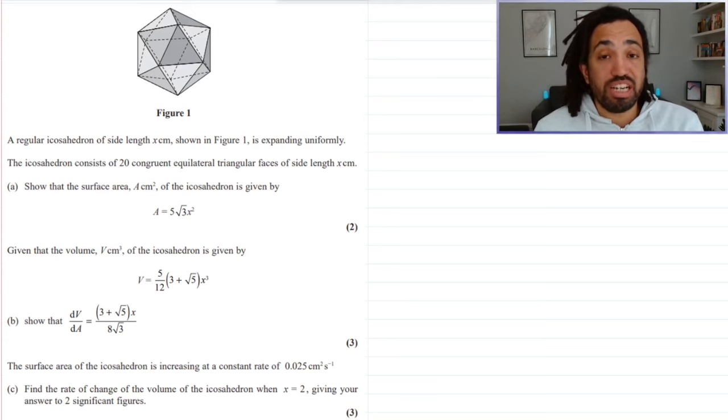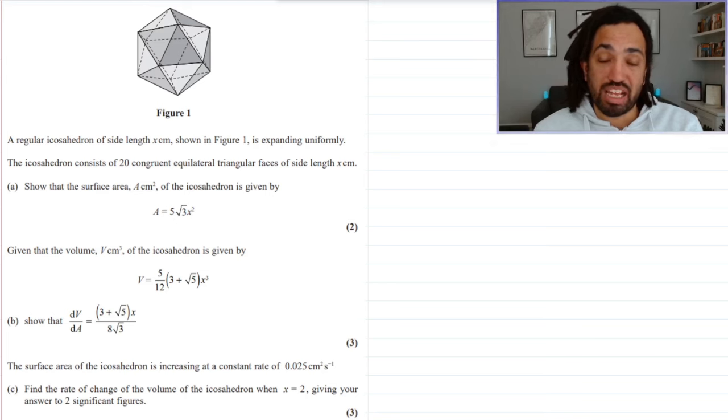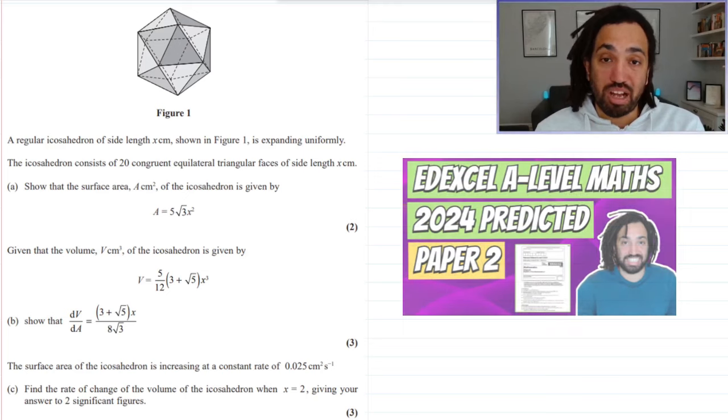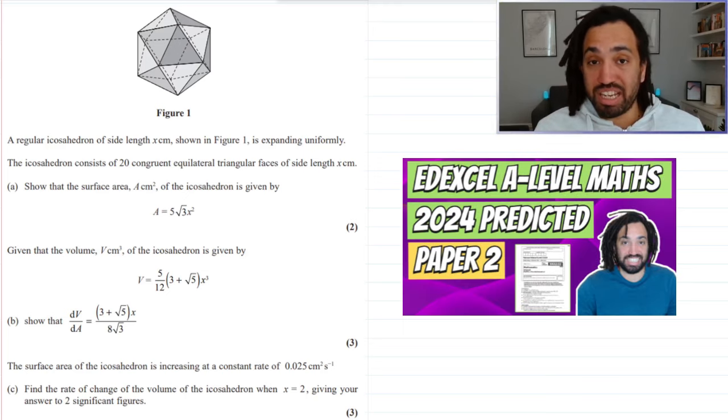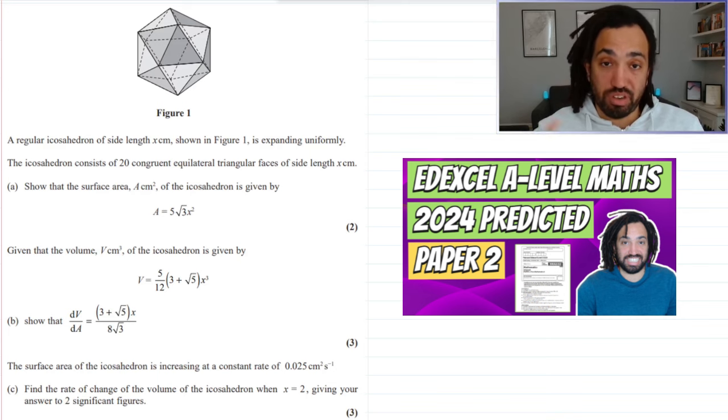But to be fair, we didn't have any rates of change where you had to use the chain rule. So I thought, why not have a go at this question and also it's got a really nice shape at the top. Okay, revision. I hope you're revising half of paper 2 and I hope you have downloaded my predicted paper 2 already and had a go at that and then watched the video. If not, you can find it right here.